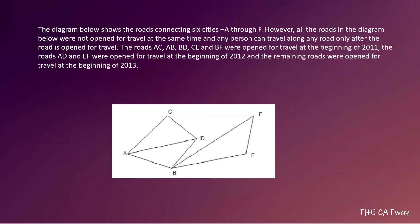The question says that the diagram below shows the roads connecting six cities A through F. However, all the roads were not open for travel at the same time — a person can travel along any road only when it is open. The roads AC, AB, BD, BF, and CE were open for travel at the beginning of 2011.